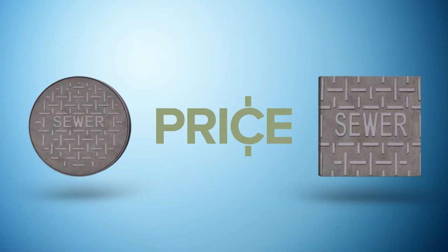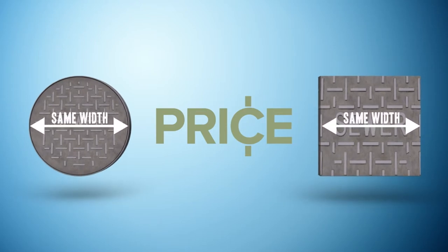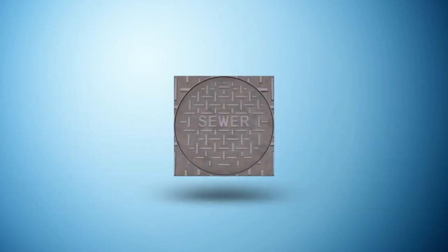Another factor is price. Take a round and square manhole cover with the same width. The round cover has a smaller surface area, thus less material is needed to make the manhole cover, meaning lower cost.